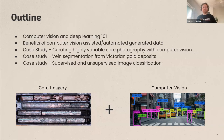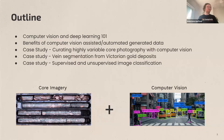Then we'll talk about some of the benefits, and then dive into three case studies. The first is about how we can clean up really variable historic core photos to make them neat and tidy and available for data analytics. Then we'll talk about some vein segmentation work from Victorian goldfields, and then how we can use image classification in a supervised and unsupervised way to learn things about geology from core imagery.